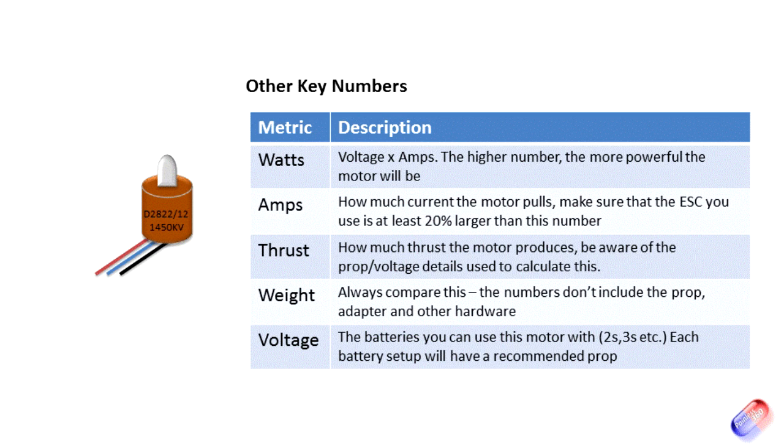Amps: how much current the actual motor pulls. You obviously need to make sure that the speed controller that's running the motor has at least 20 percent more current available. So for example, if this motor pulled 22 amps peak, then you would want a 25 amp speed controller to make sure that you're covered. You never use a speed controller with a lower rating than the motor.